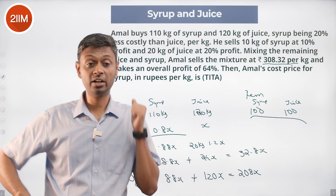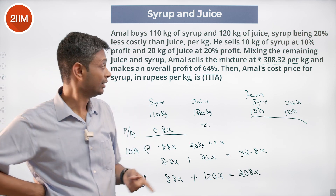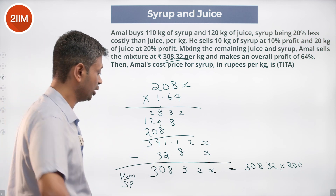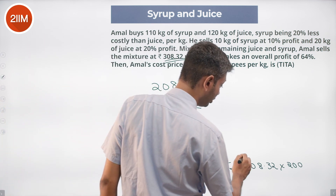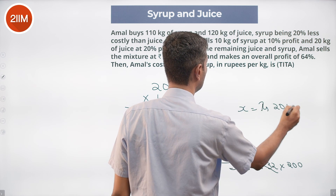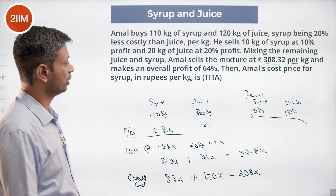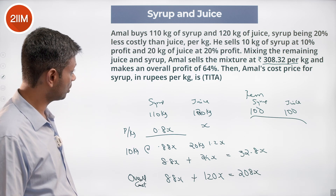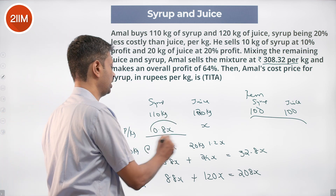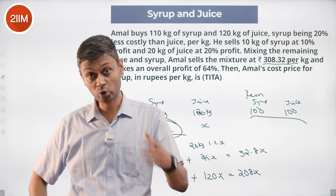He sells 200 kilograms of the remaining mixture — 100 kg syrup plus 100 kg juice. So 308.32 per kilogram into 200 kilograms equals 308.32X times 200. This gives X equals 200. Therefore the per kilogram cost of juice is 200 rupees, and syrup is 0.8X, which is 160 rupees per kilogram.